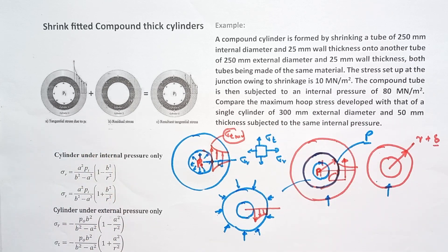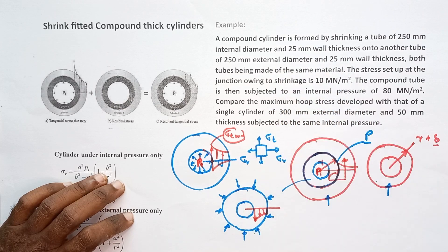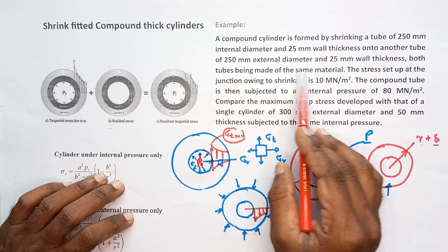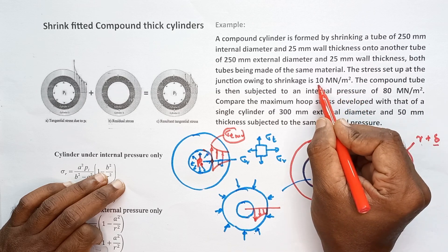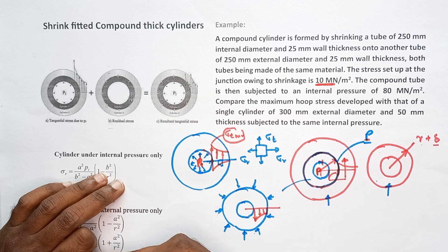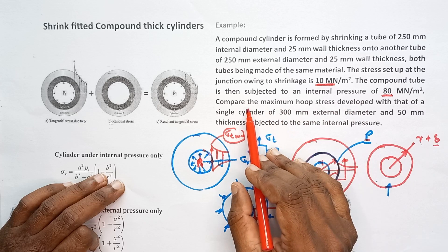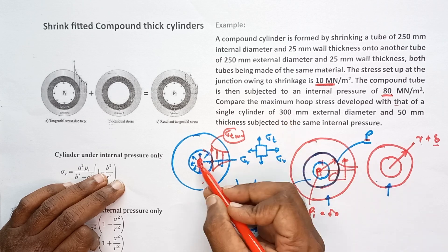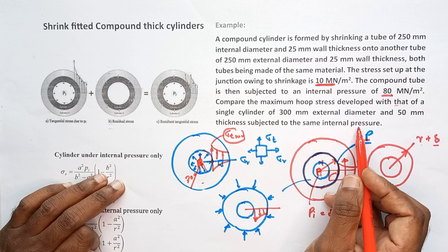This problem is related to the shrink fitting process. The compound cylinder is formed by shrinking a tube of 250mm internal diameter and 25mm wall thickness onto another tube, both tubes being made of the same material. The stress set up at the junction after shrink fitting is equal to 10 MN/m². The compound tube is then subjected to an internal pressure of 80 MPa. Compare the maximum hoop stress developed with that of a single cylinder of 300mm external diameter and 50mm thickness subjected to the same internal pressure.